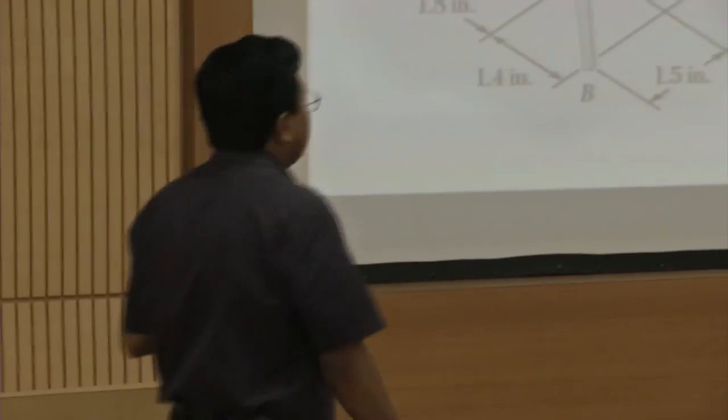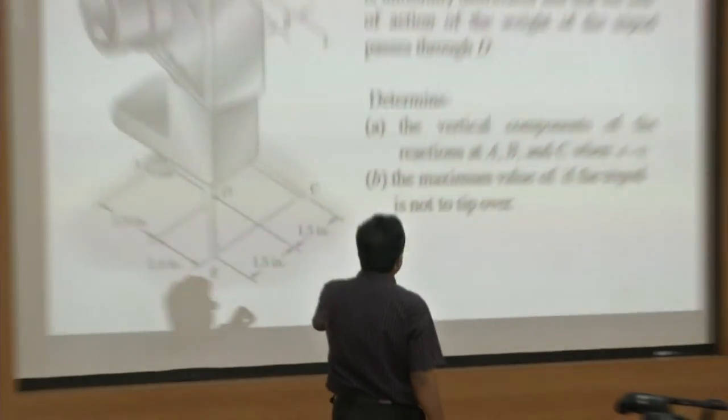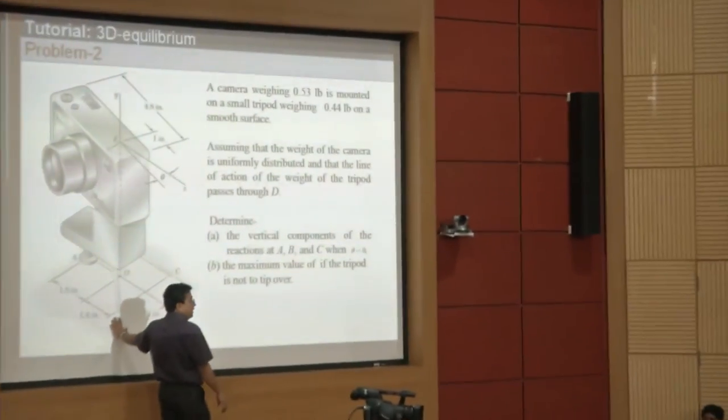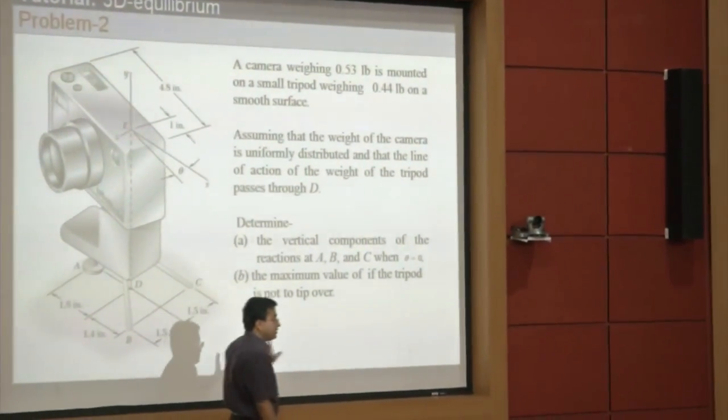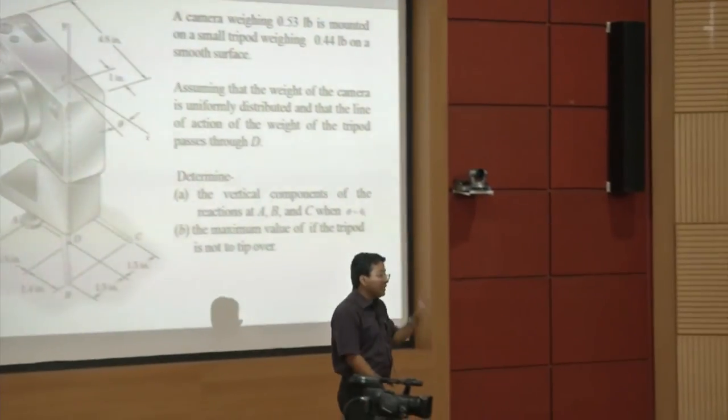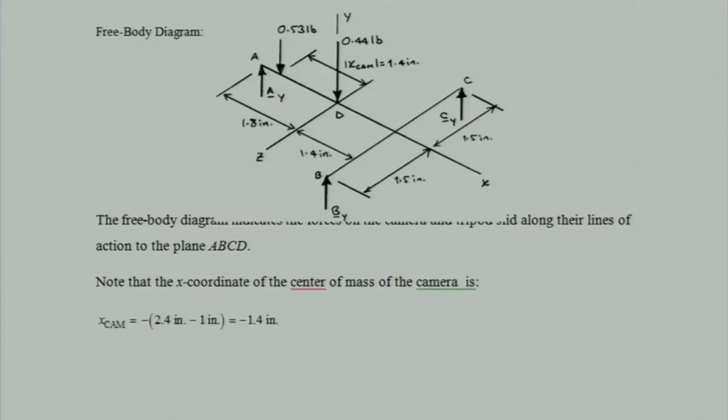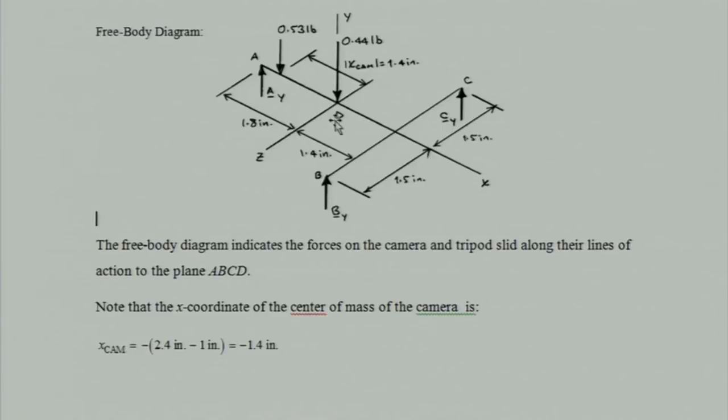The condition for the tip-over is that the reaction at B will be equal to 0. That is the condition we have to use. At the verge of tipping, R_B equals 0. The question asks for it not to tip over, which means B_Y should be greater than 0. As long as B_Y is greater than 0, it is not going to tip over. I will quickly show you the free body diagram as a hint to this problem.